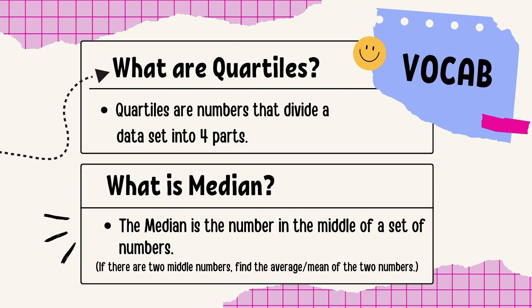So first things first, what are quartiles? Quartiles are numbers that divide a data set into four parts. The other thing you're going to need to know is median. Median is the number in the middle of a set of numbers. If there are two numbers, you're just going to find the average or the mean of those two numbers.